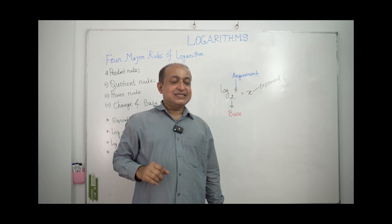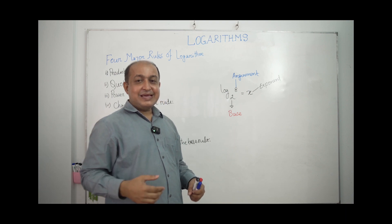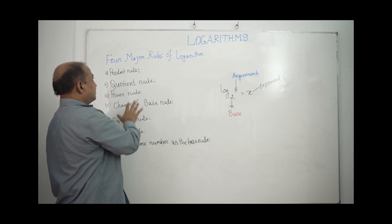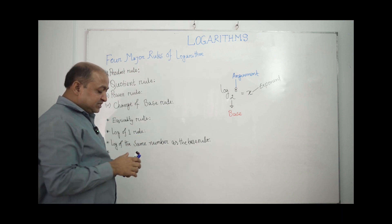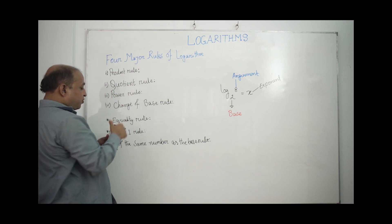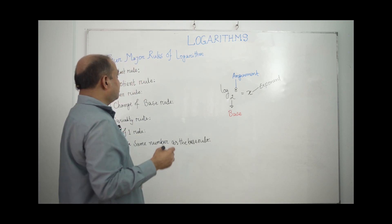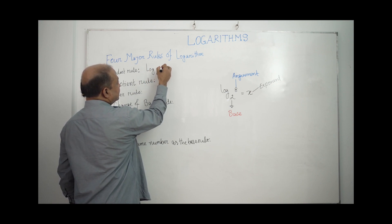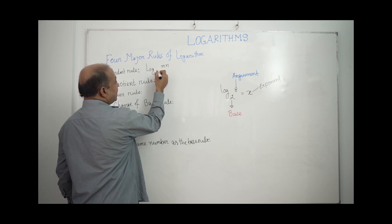We need to find out: what is the logarithm of 8? There are 4 major rules of logarithm. The first one is the product rule. Product means multiplication. We normally write log base b of mn.